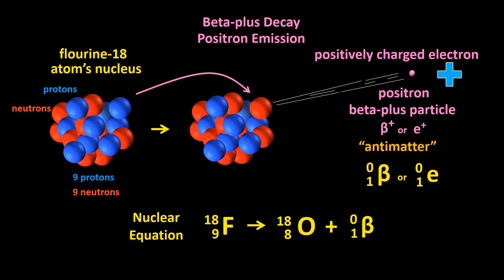Fluorine 18 undergoes beta plus decay and turns into oxygen 18. Notice that 9 equals 8 plus 1, and that 18 equals 18 plus 0. Beta plus decay typically occurs in nuclei that have too many protons, or I suppose not enough neutrons, depending on which way you want to look at it.